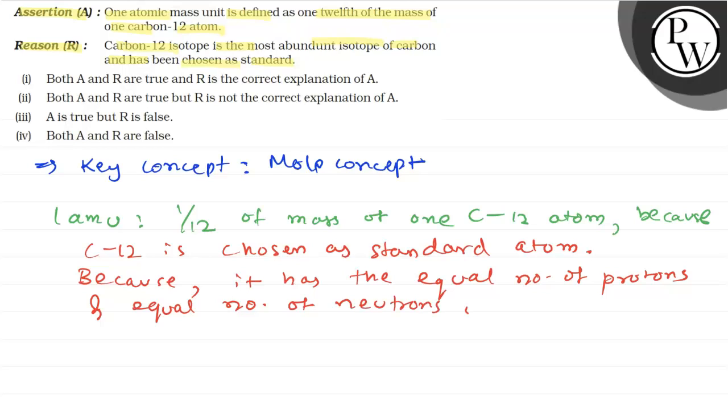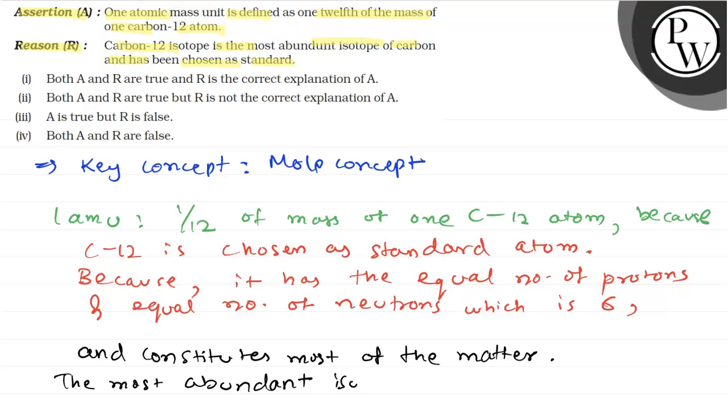which is 6 for both cases. It constitutes most of the matter, or we can say living matter available to us. We know that the most abundant isotope of carbon is C-12.